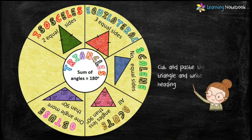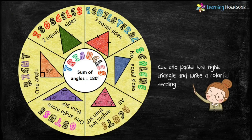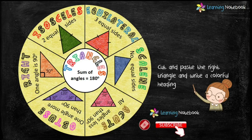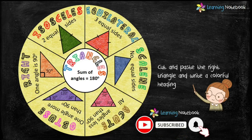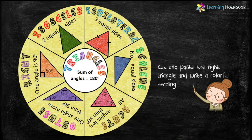In the last sector, cut and paste a right triangle and write a colorful heading along with its property — that one angle is 90 degrees. So students, in this way we have completed a triangle wheel. Through this activity you will learn not only the types of triangles on the basis of sides and angles, but you will also create a beautiful triangle wheel, so do try this activity!